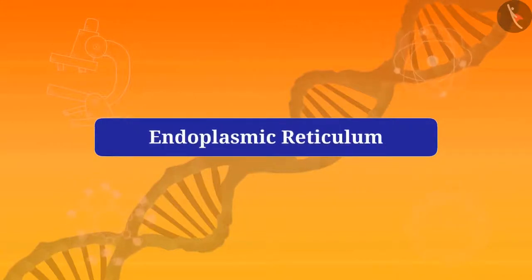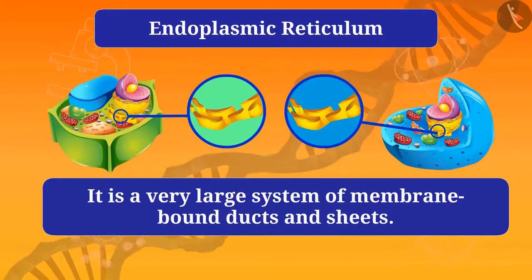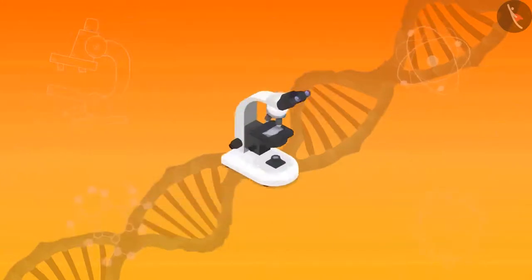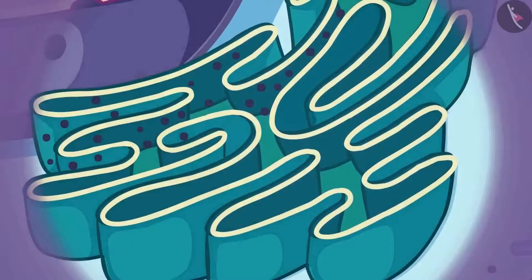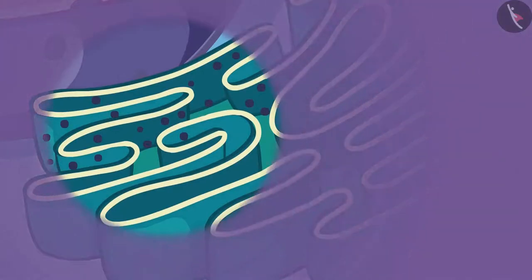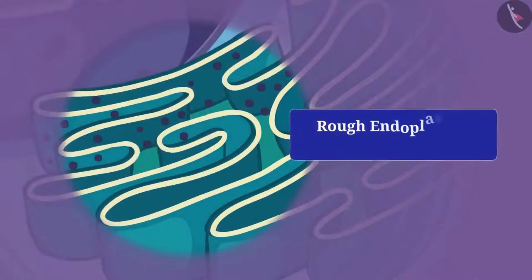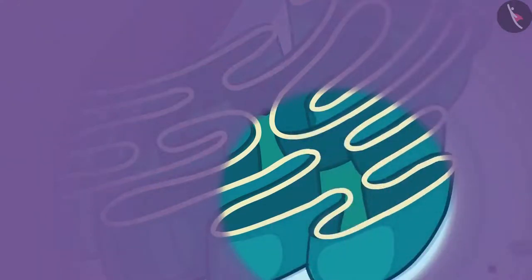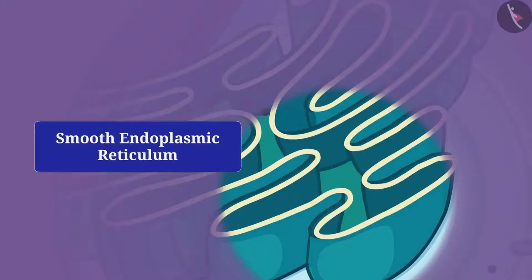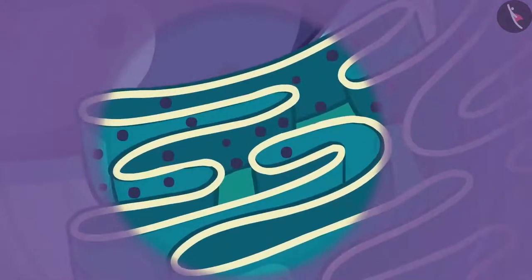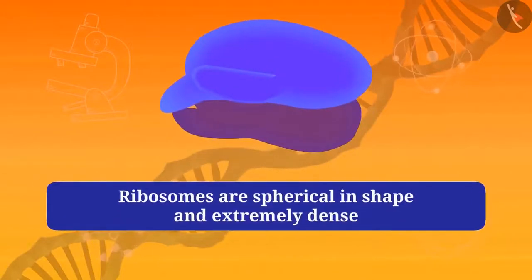We have already learned about the nucleus; now we will learn about the endoplasmic reticulum. It is a very large system of membrane-bound ducts and sheets, and its composition is similar to that of the cell membrane. If you look at it carefully under the microscope, you can see a difference in structure — somewhere there are black dots while in other areas they are absent. The endoplasmic reticulum that has black dots is called rough endoplasmic reticulum, and the one without dots is called smooth endoplasmic reticulum.